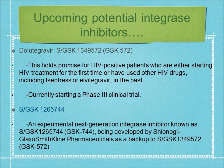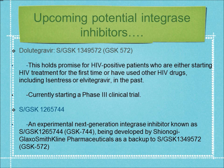Upcoming potential integrase inhibitors include Dolutegravir, S-GSK1349572, which holds promise for HIV-positive patients either starting treatment for the first time or who have used other HIV drugs including Raltegravir or Elvitegravir. It is currently starting a Phase 3 clinical trial. S-GSK1265744, an experimental next-generation integrase inhibitor known as GSK744, is being developed by GlaxoSmithKline as a backup to S-GSK1349572. This second-generation drug inhibitor achieved therapeutic concentration with once-daily dosing without the need for a pharmacokinetic boosting agent.